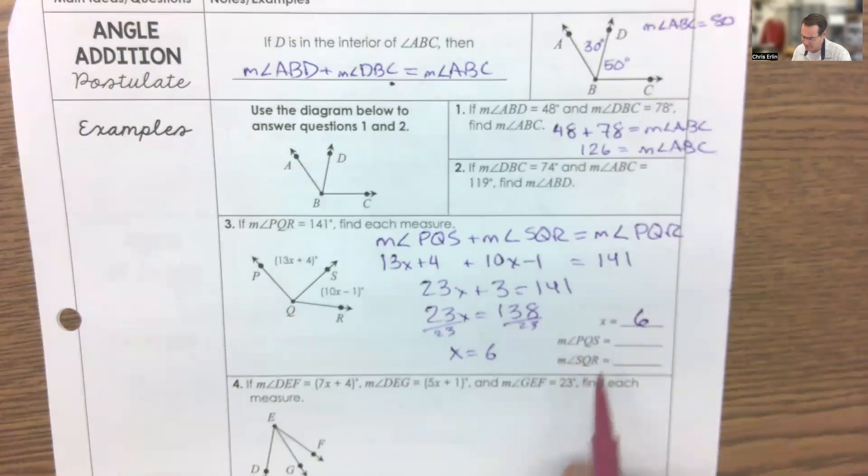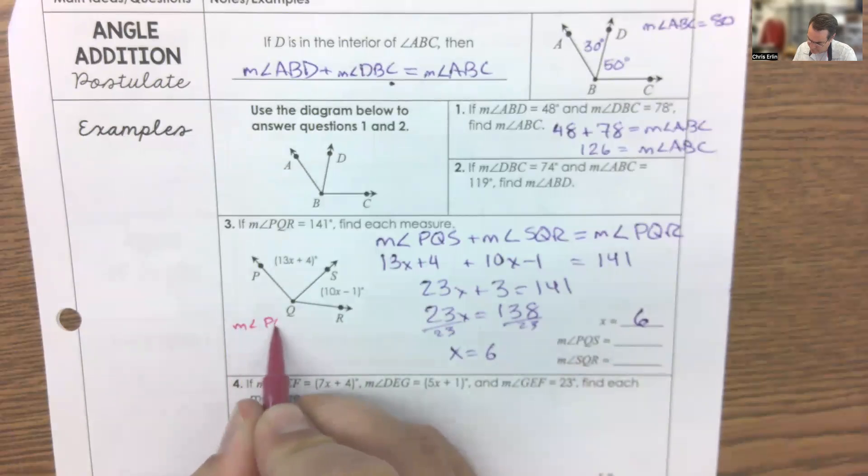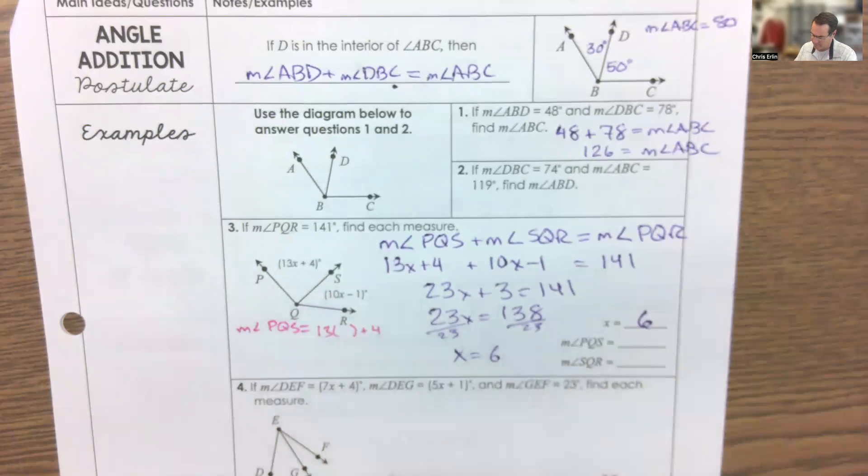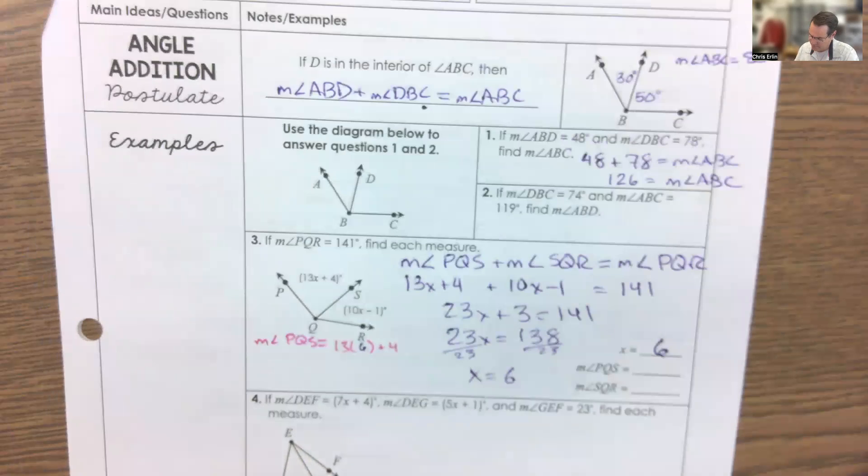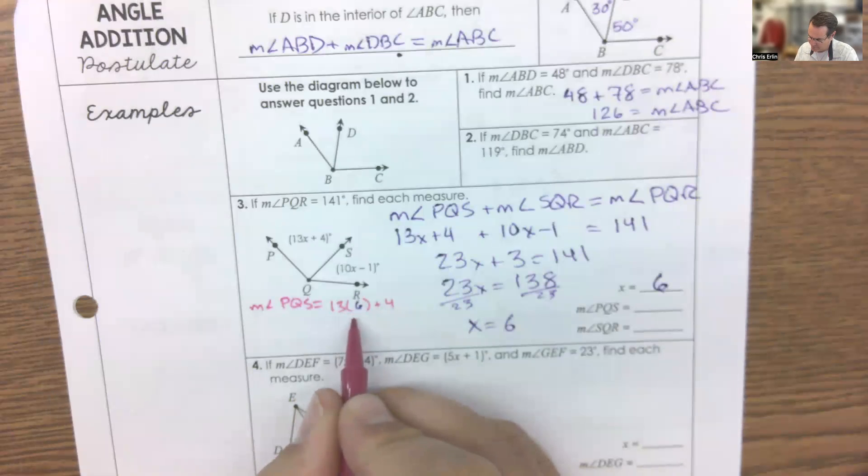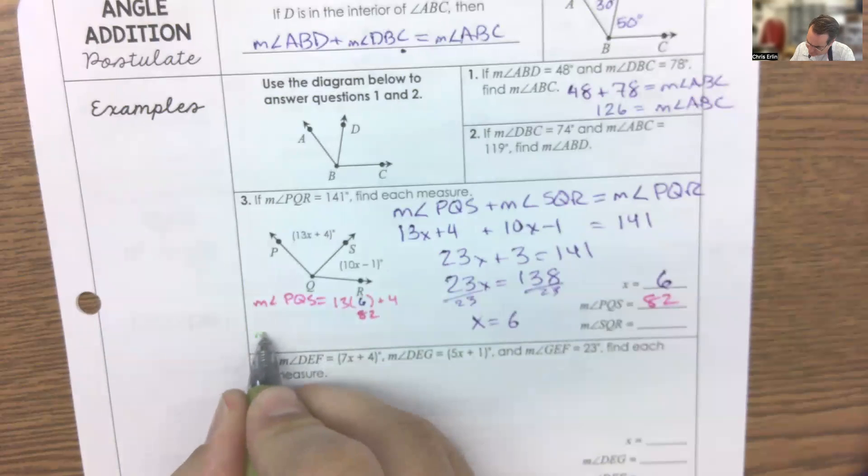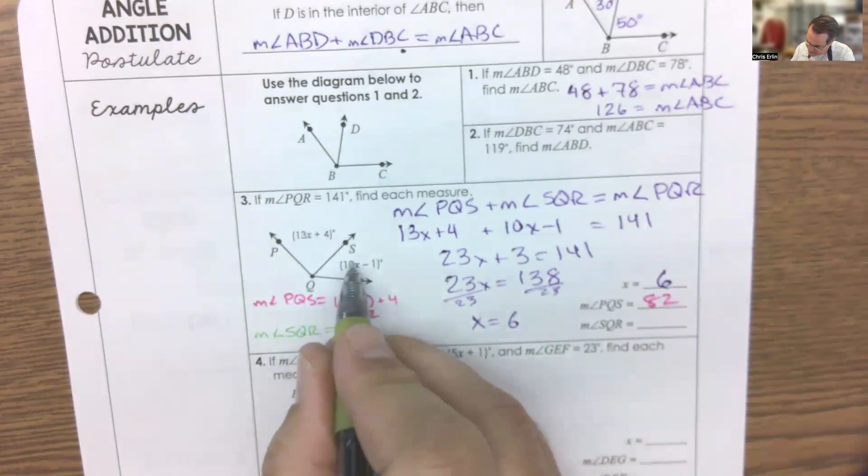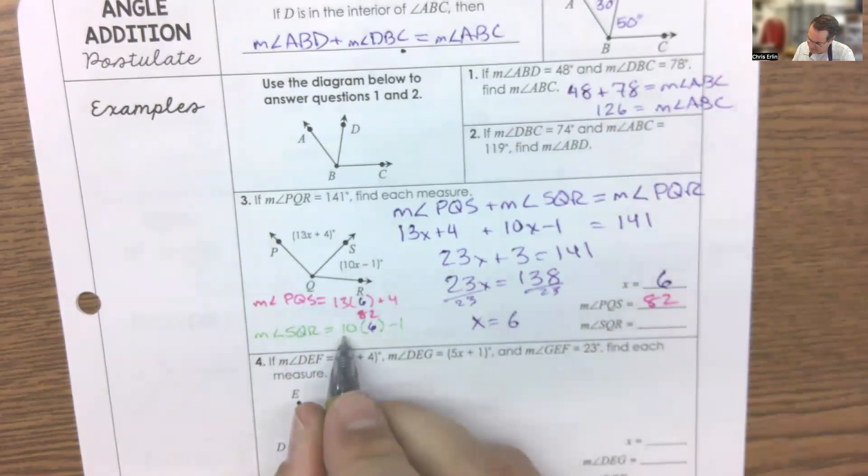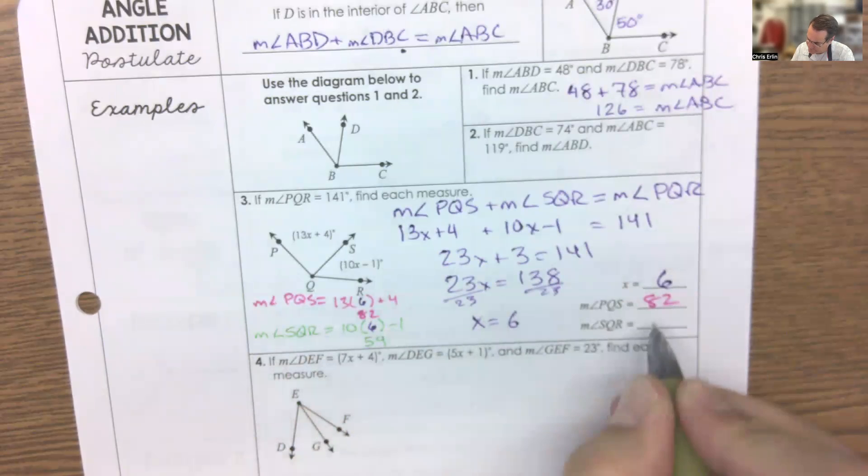And then this asks for a little more. It asks for the measure of PQS. Well, the measure of PQS is supposed to be 13 times whatever X is plus 4. I now know that X is 6. So 13 times 6 is 60, 78 plus 4 would equal 82. So PQS is 82. We also want SQR, which is supposed to be 10 times whatever X is minus 1. In this case, X is 6. 10 times 6 is 60 minus 1 is 59. So this is 59 degrees.